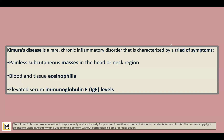Symptomatically, Kimura disease is characterized by a triad: painless subcutaneous masses in the head or neck region, tissue and blood eosinophilia, and raised levels of IgE.